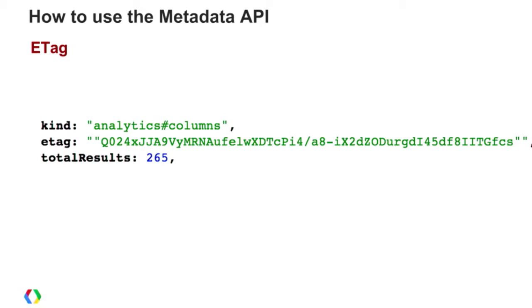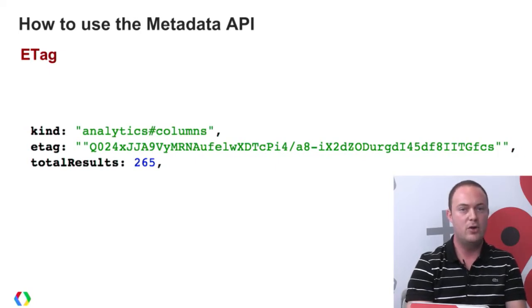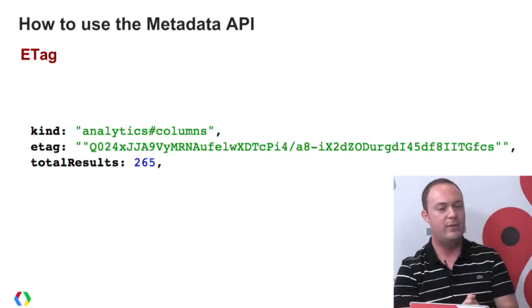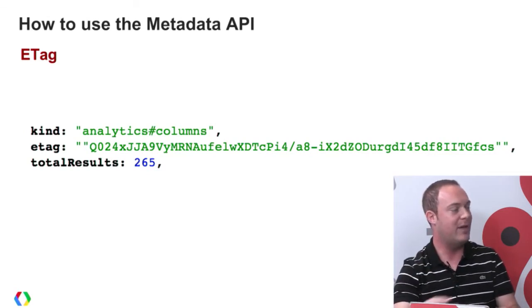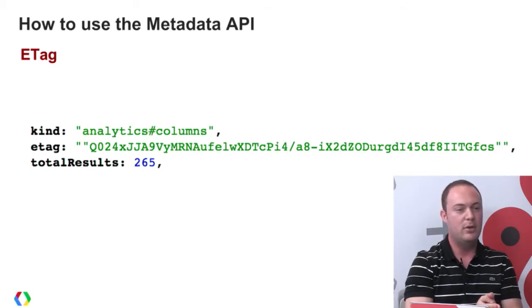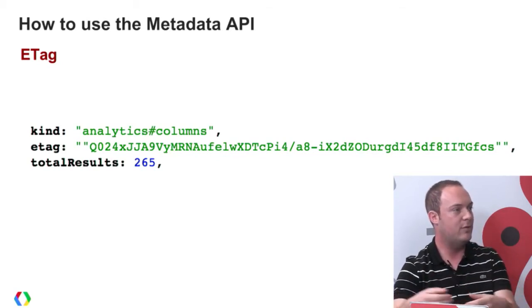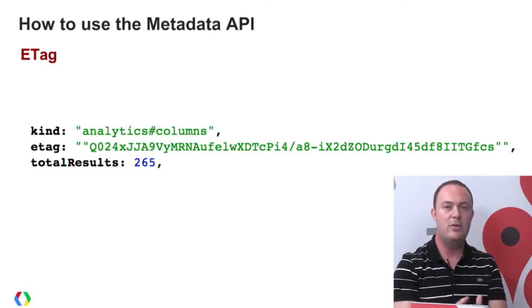The final attribute to talk about is the ETag value. When you make a request to the Metadata API, you'll get a response back with an ETag attribute. This is a unique identifier you can use to determine whether the response has changed since the last time you requested it. If you cache the response client-side or server-side and then make another request, if the ETag value matches what you have stored, the response has not changed.